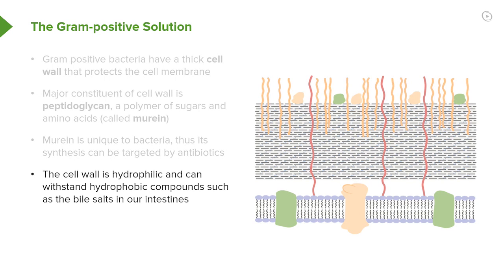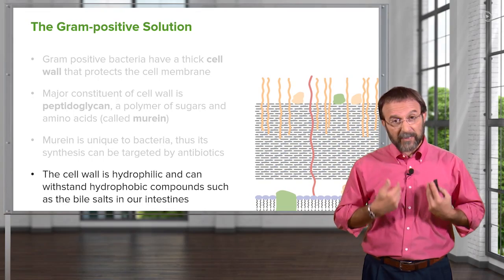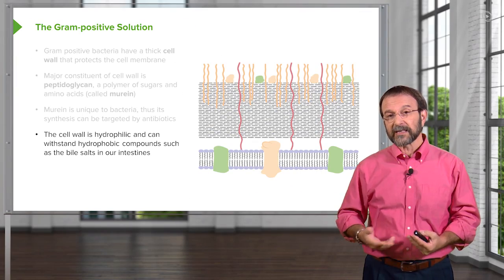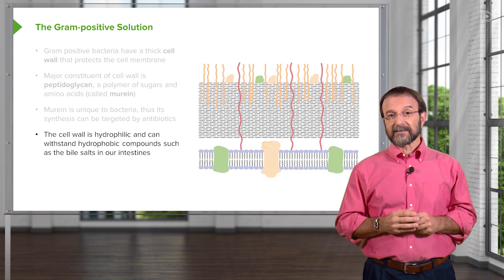As I said, this cell wall is hydrophilic. So hydrophilic compounds which the bacteria need can pass through it. But hydrophobic compounds, which are typically the dangerous ones, are excluded. So for example, we have in our intestines bile salts to help us digest. These are very detrimental to bacteria, but the peptidoglycan actually can resist the bile salts. So many bacteria can pass through our stomach and intestine to infect us.